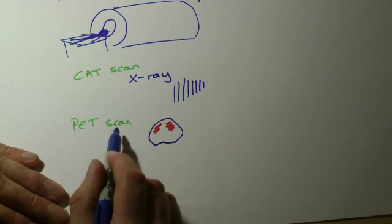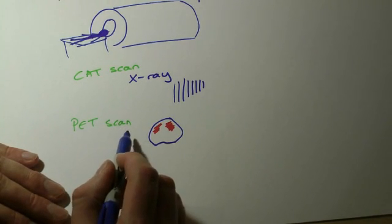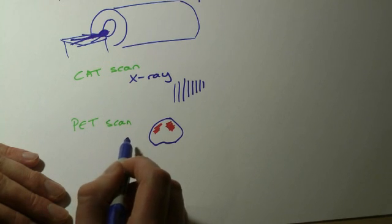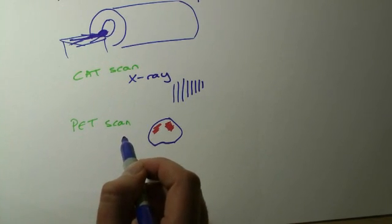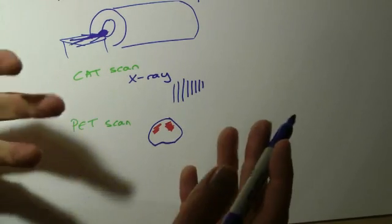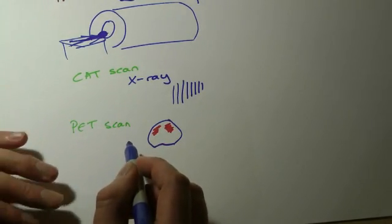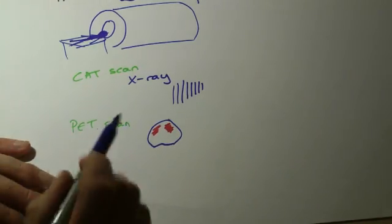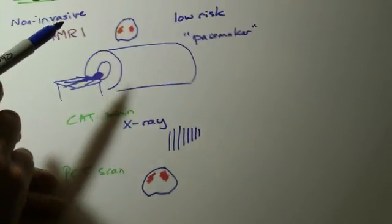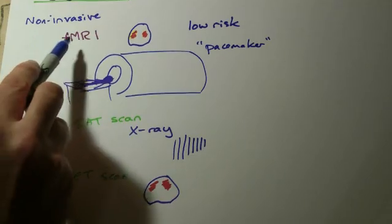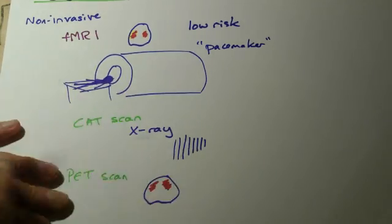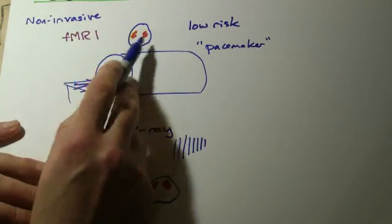These ones actually do have a bigger risk. You're exposed to quite a bit of radiation, so they wouldn't be used unless there was a good medical reason. You wouldn't just go in and have one done for fun. So these techniques can be used to study the brain. The fMRI uses magnetism, pretty low risk. Areas of the brain that are active would light up.